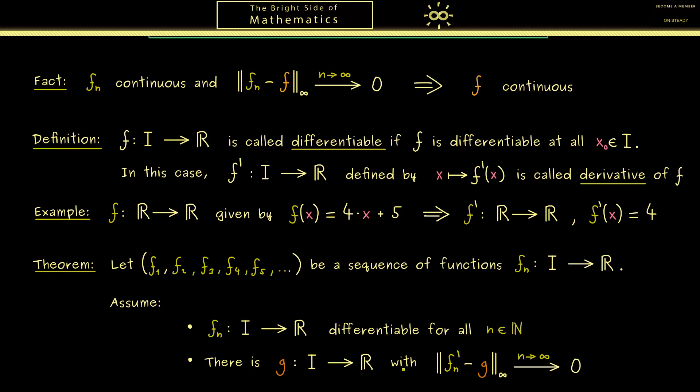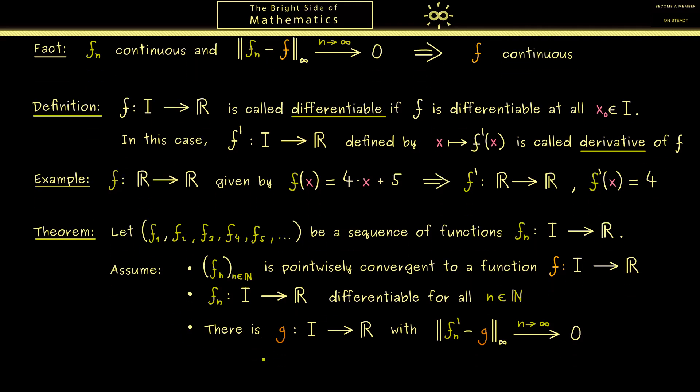Then a natural question would be: is the original function fn also uniformly convergent to a limit function f? In general I can tell you this is not true; we need one additional assumption. In fact, it's sufficient when we have that the functions are pointwise convergent to a limit function f. Please recall pointwise convergence is a much weaker condition than uniform convergence. Then the conclusion is now we have uniform convergence.